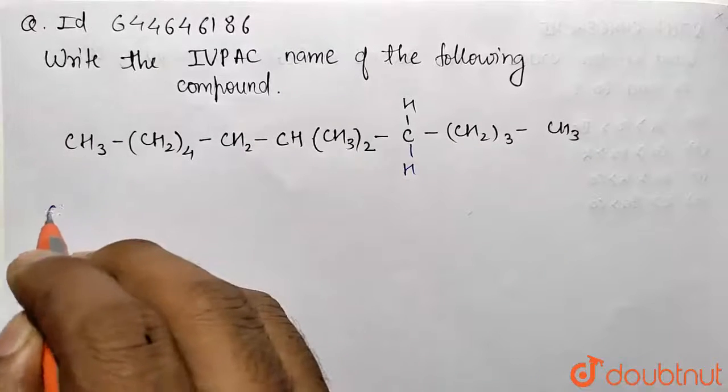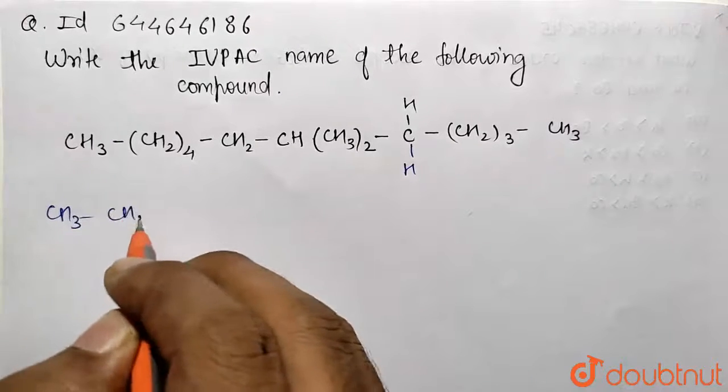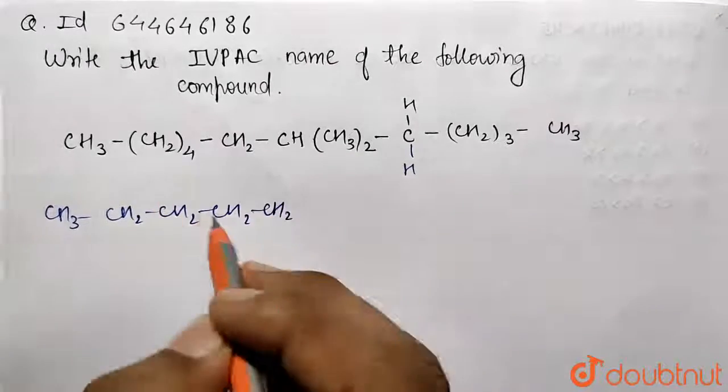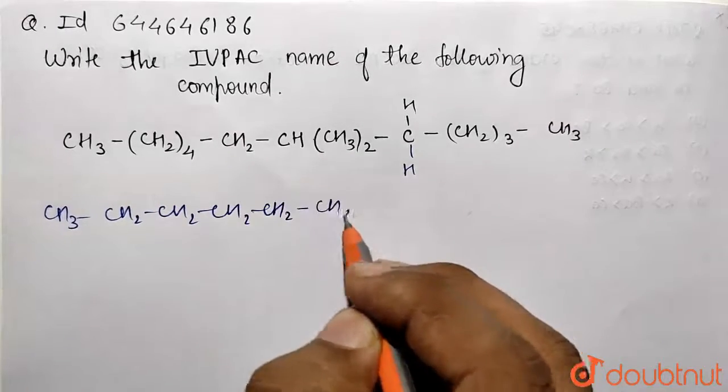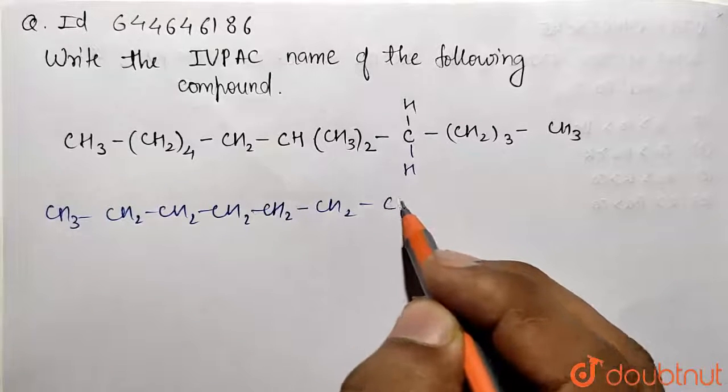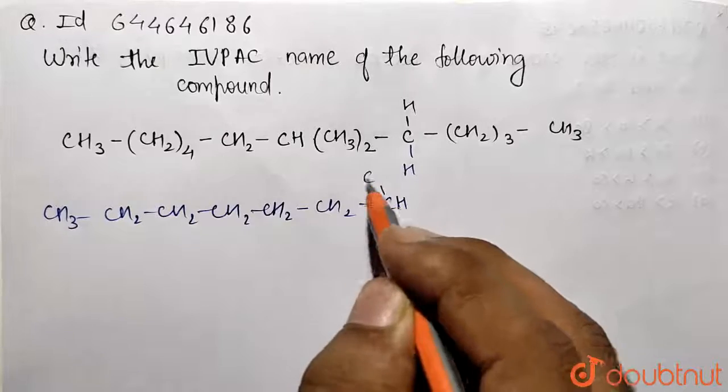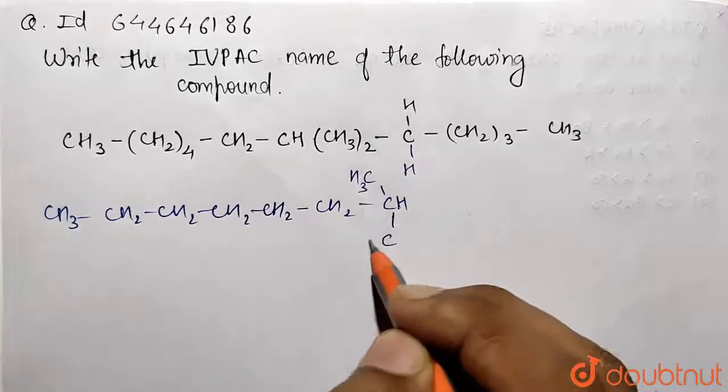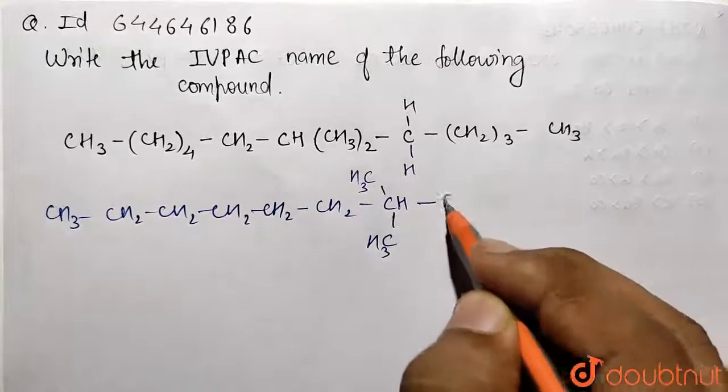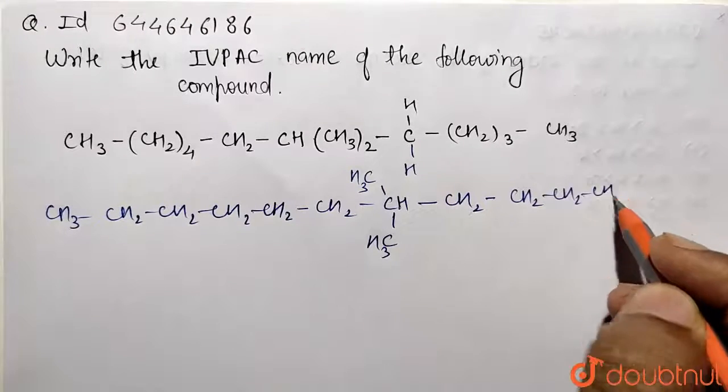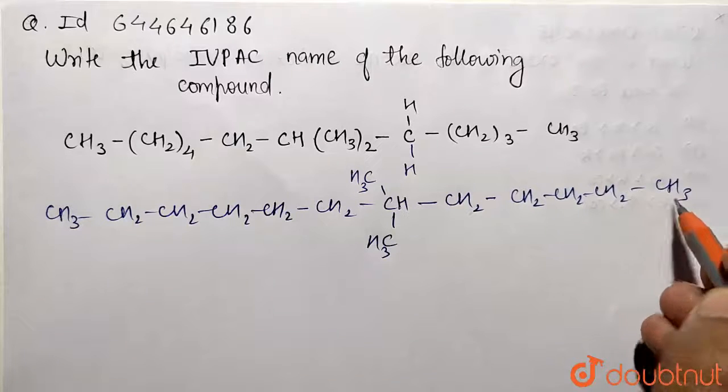Let me rewrite it in simpler form: CH3-CH2-CH2-CH2-CH2-CH2, then CH with two CH3 methyl groups attached, then CH2 connected with three other CH2 groups and lastly CH3.